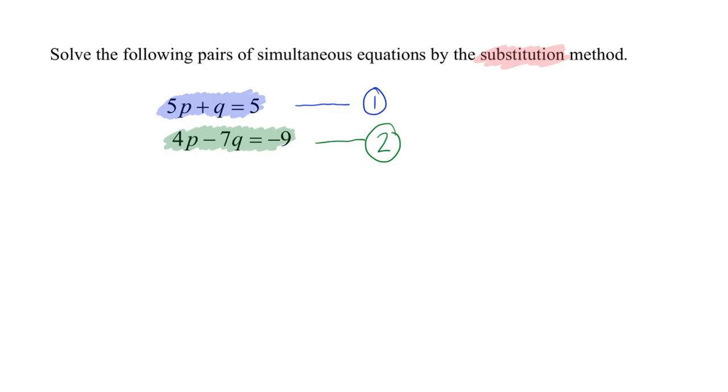Mr. Tang saw that the first equation is easier for substitution method because I can easily find the variable Q. Q equals 5 minus 5P - minus 5P on both sides - and this will be equation 3.